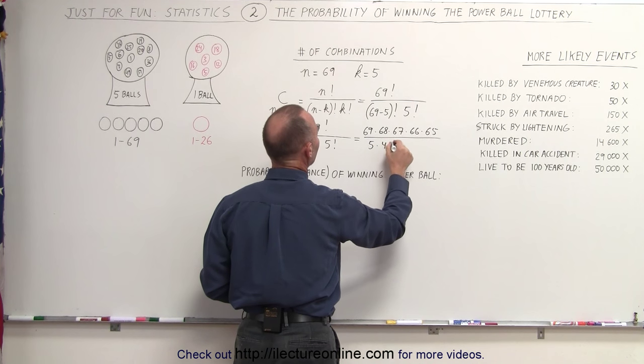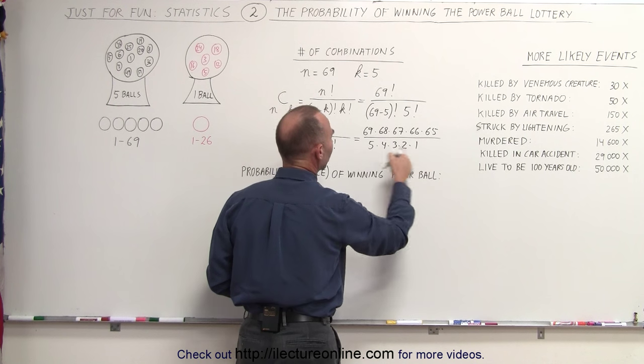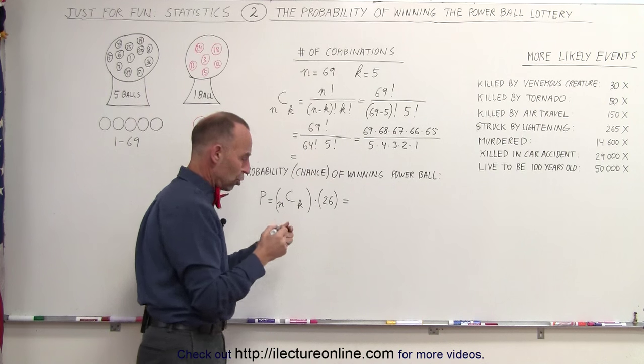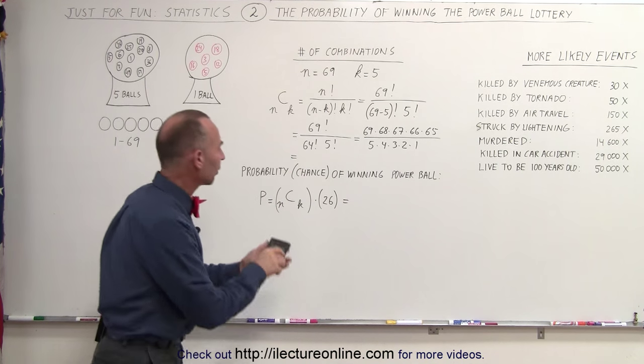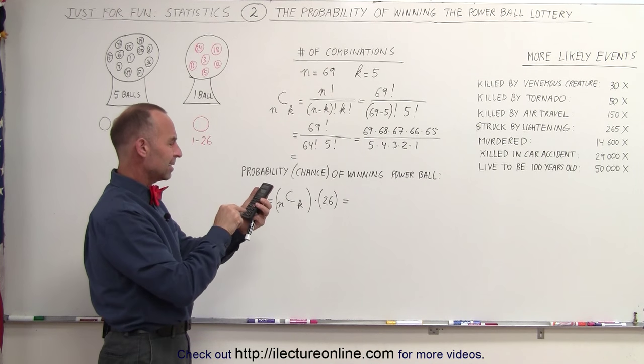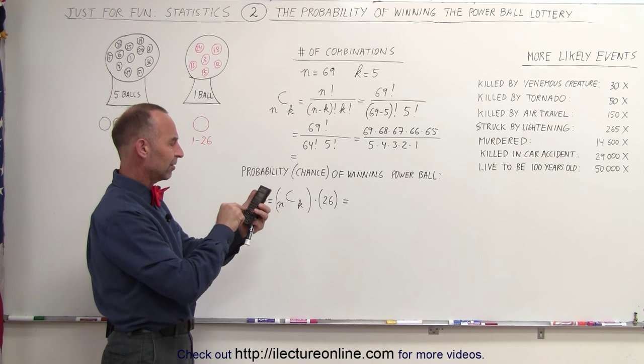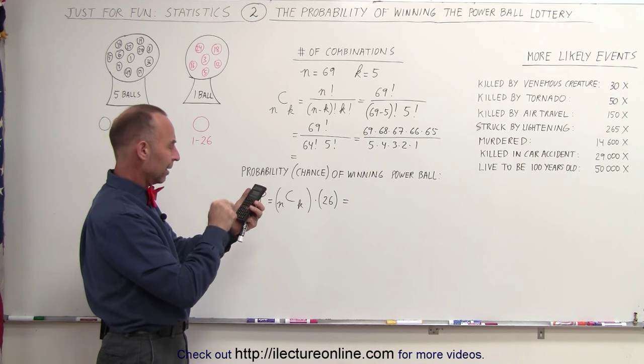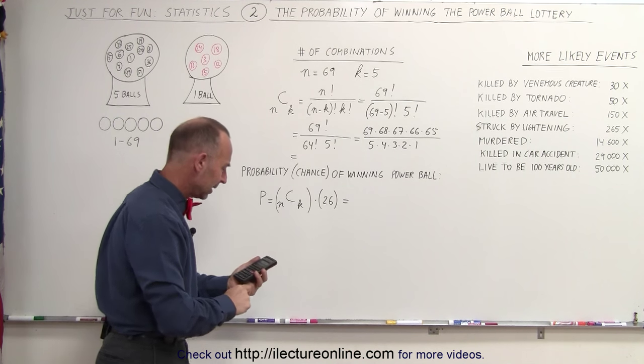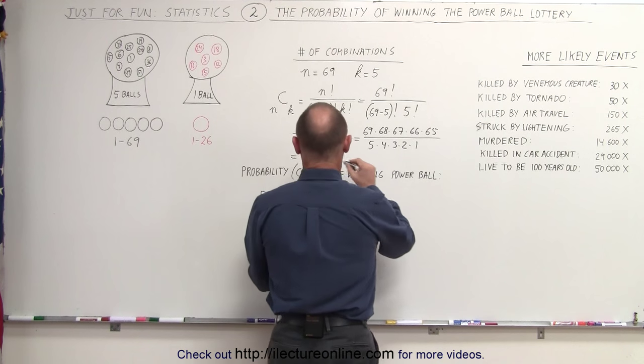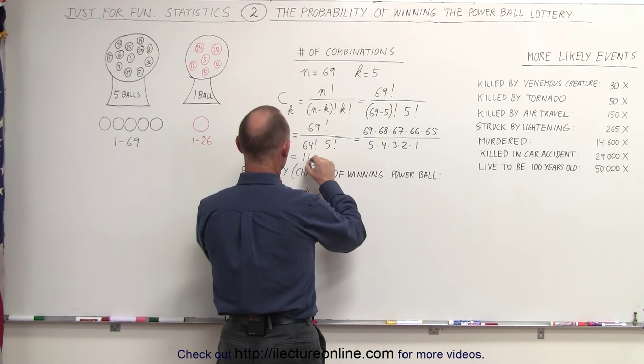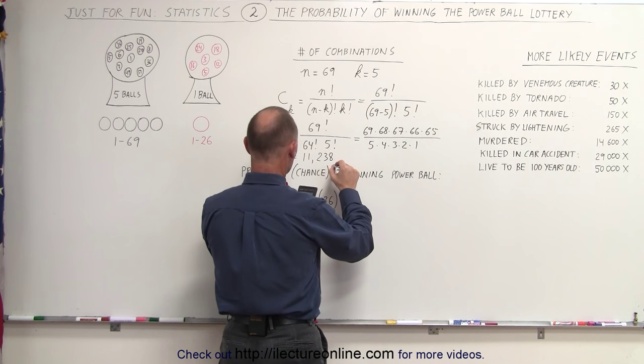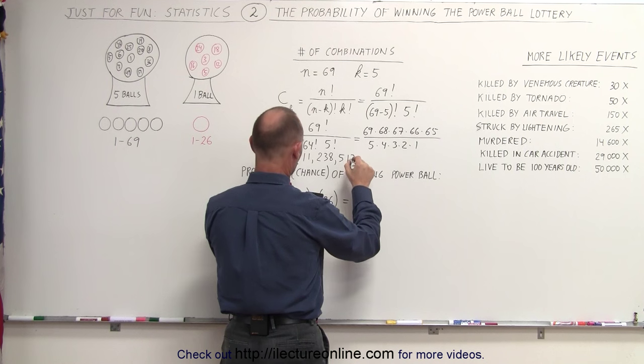which is 5 times 4 times 3 times 2 times 1. 5 factorial, by the way, is 120. So 69 times 68 times 67 times 66 times 65, and divide that by 120. And so I get 11 million, 238,513.